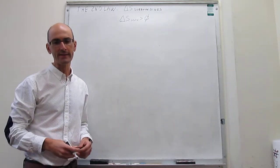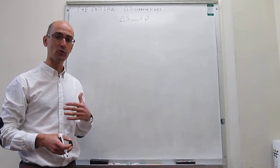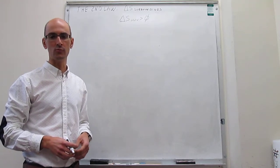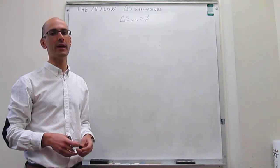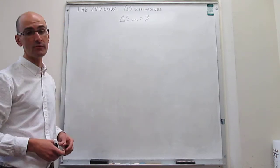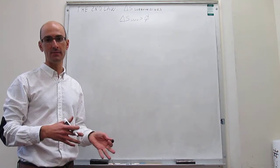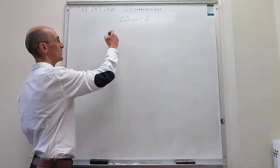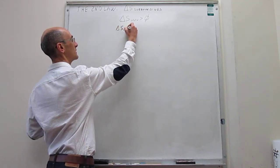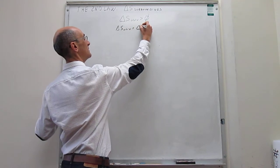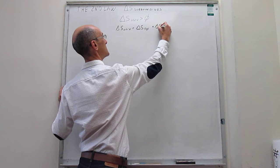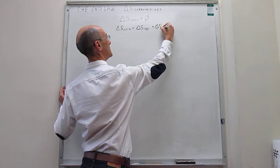If you calculate a delta S of the universe that is negative, then you can conclude right away that the process will not happen as written without any external aid. Notice that the universe has two components — the system and the surroundings — so you can rewrite this expression simply as the sum of the entropies of the system and the surroundings.